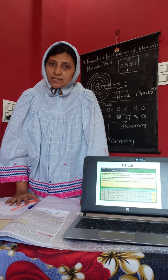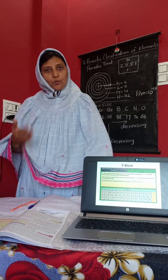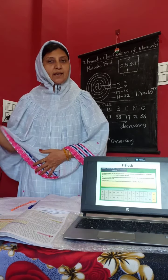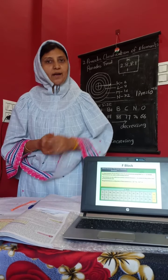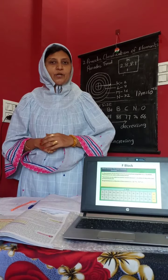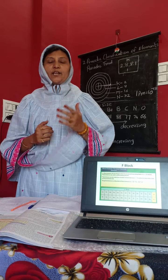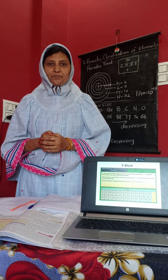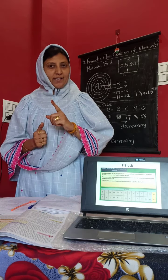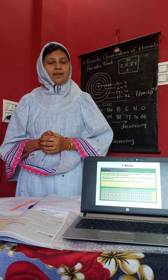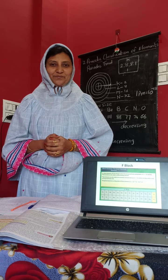So this is the detail about the periodic trends in valency and atomic size. A few more trends are there that we will see in the next part. I hope you understood this topic and liked it. If you liked it, please share it and like it.